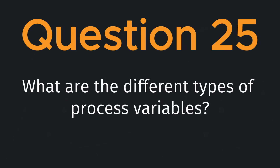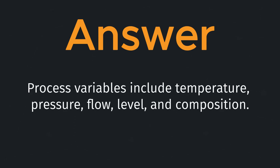Question twenty-five: what are the different types of process variables? Process variables include temperature, pressure, flow, level, and composition.